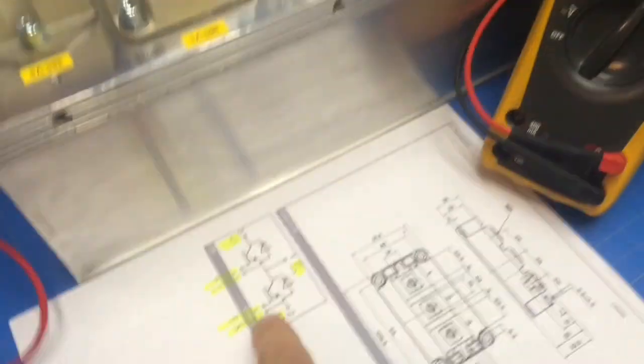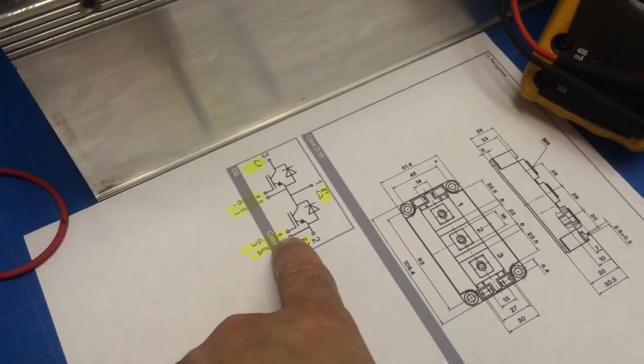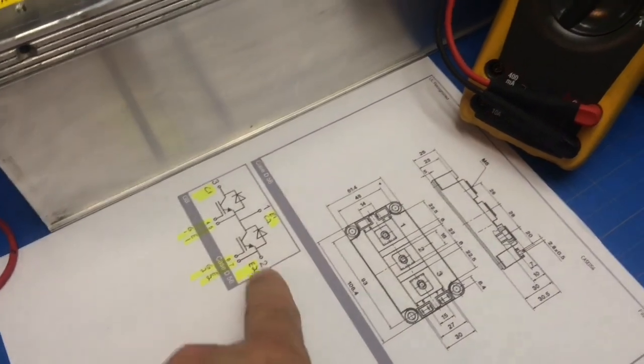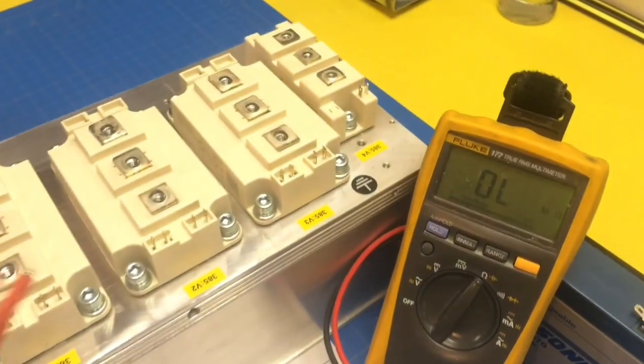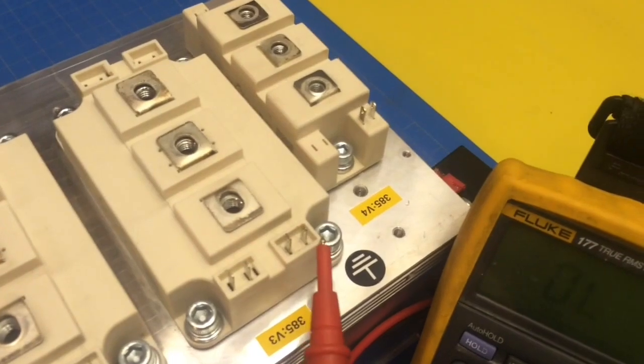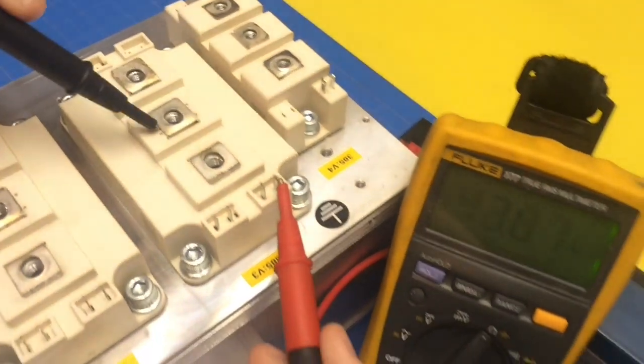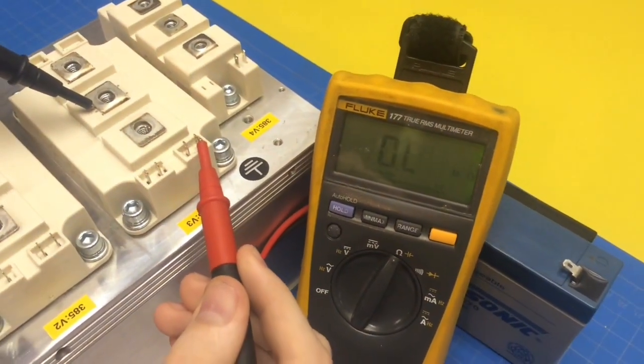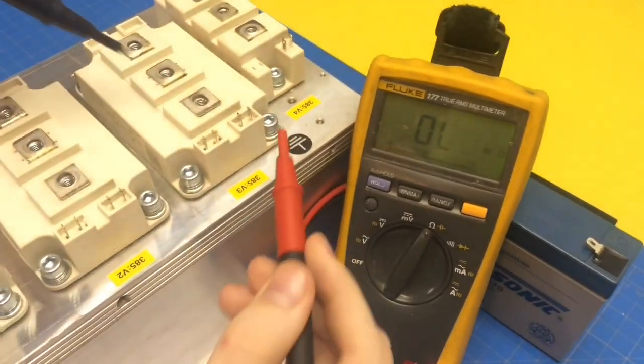Okay, so that reads good. Now we're going to do 4 to 3. That reads good. So now let's go over here. Pin 6 is the gate, so you can do 6 to 2. Yeah, that one.